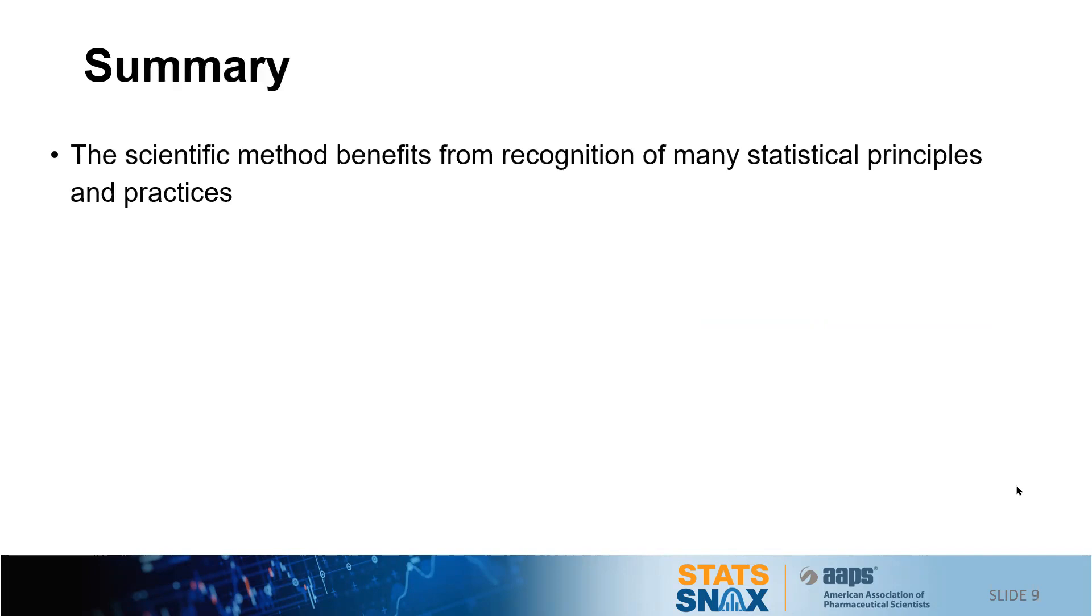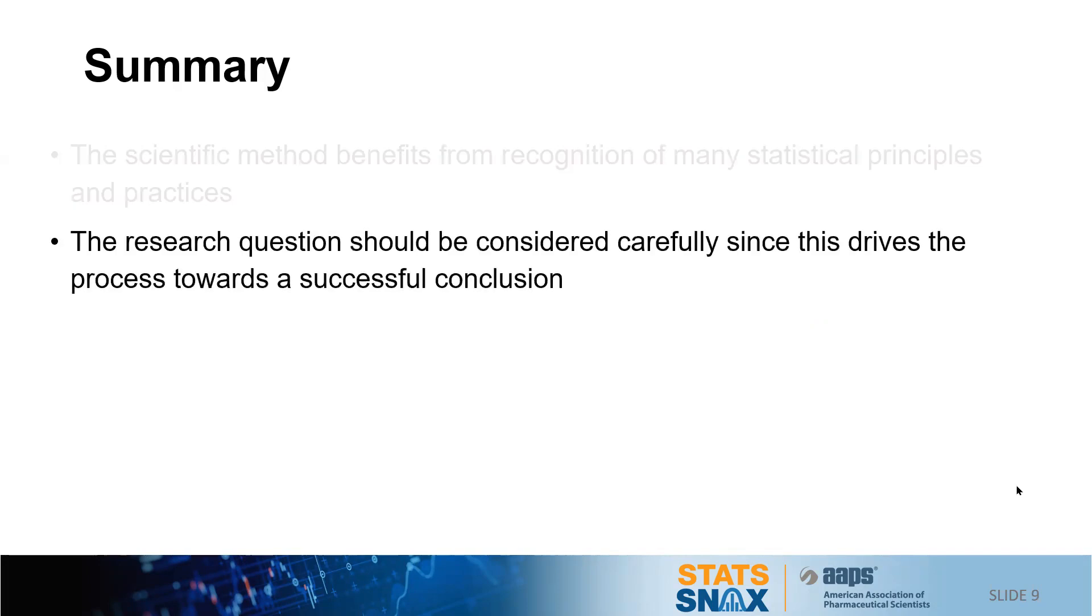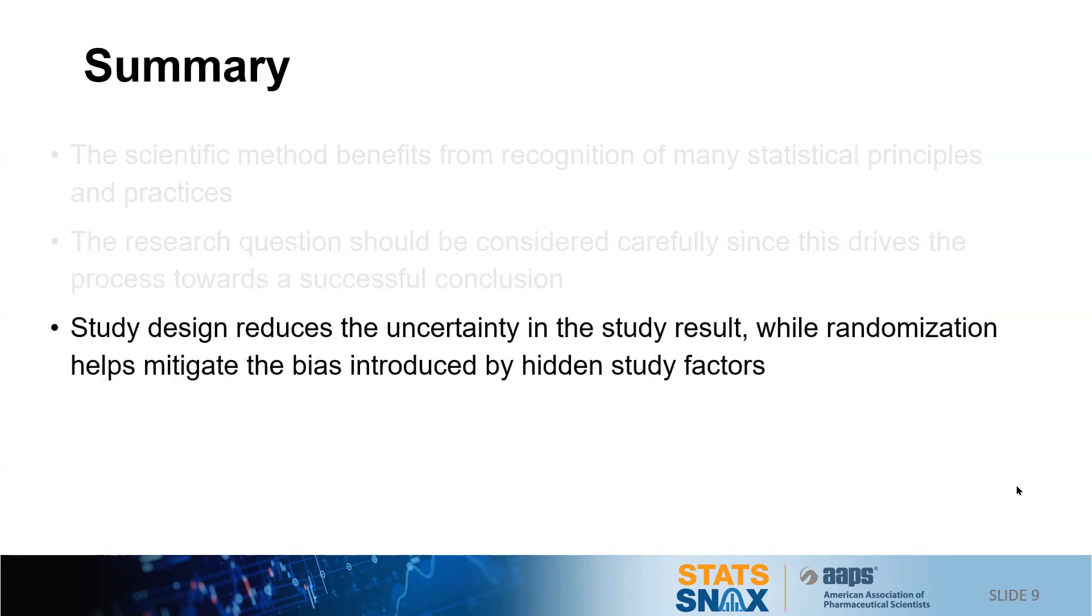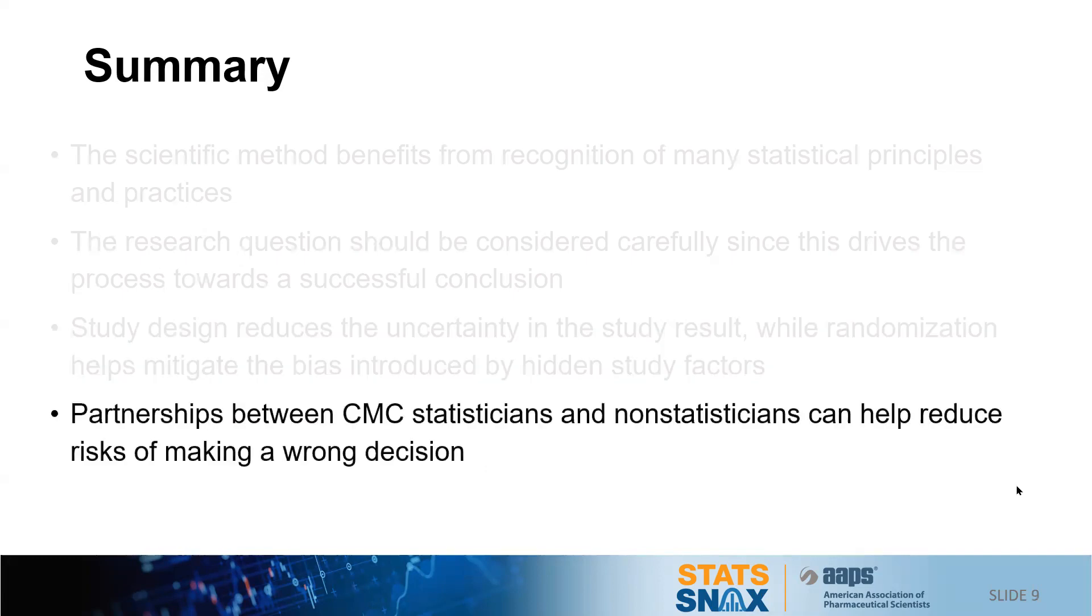So in summary, the scientific method benefits from recognition of many statistical principles and practices. The research question, the alternative hypothesis as I formulated, should be considered carefully since this drives the process towards a successful conclusion. If we get the question wrong, all of the rest is for naught. Study design reduces the uncertainty in a study result, while randomization helps mitigate the bias introduced by hidden study factors. And then finally, partnerships between CMC statistician and non-statisticians can help reduce risks of making a wrong decision.